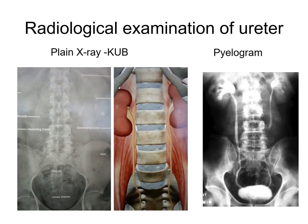Radiological examination of ureter. The ureter is commonly examined by a plain X-ray known as KUB — kidney, ureter and urinary bladder. Another method used is a contrast X-ray known as intravenous urogram or pyelogram.